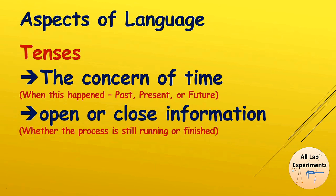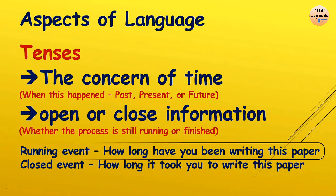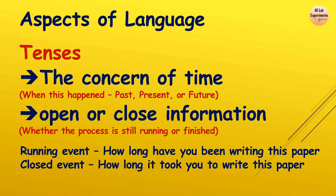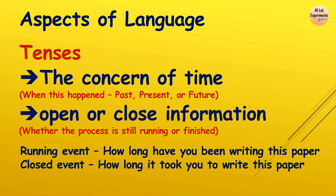For example, imagine you are writing a research paper and are still writing it, and your supervisor comes and asks, 'How long have you been writing this paper?' — that is an open event. In the second condition, when you have already completed your paper, your supervisor comes and asks, 'How long did it take you to write this paper?' — that is a closed event, meaning the process has been finished.